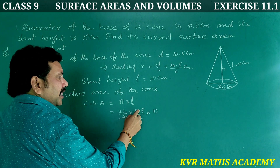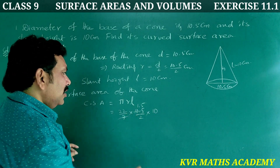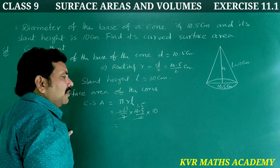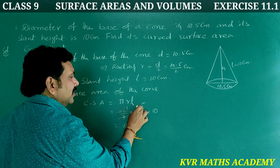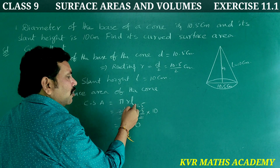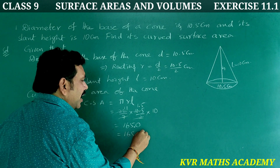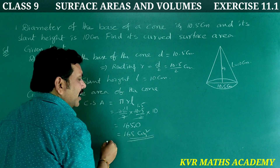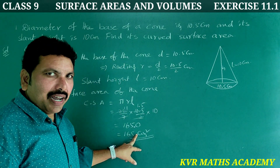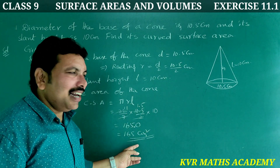Simplifying: 7 goes into 10.5 giving 1.5, and 2 cancels with 22 giving 11. So 11 times 15 is 165, then into 10 gives 1650 — but since there is one decimal digit already, the answer is 165.0, that is 165 square centimeters. Area is expressed in square centimeters.